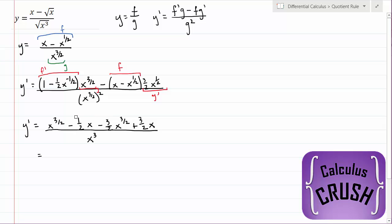Now let's group like terms together. x to the 3 halves minus 3 halves x to the 3 halves. That gives us minus 1 half x to the 3 halves. And then minus 1 half x plus 3 halves x. That's plus x. All divided by x cubed.